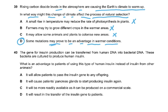Question 40: The gene for insulin production can be transferred from human DNA to bacterial DNA. These bacteria are cultured to produce human insulin. What is an advantage to patients of using this type of human insulin instead of insulin from other animals?